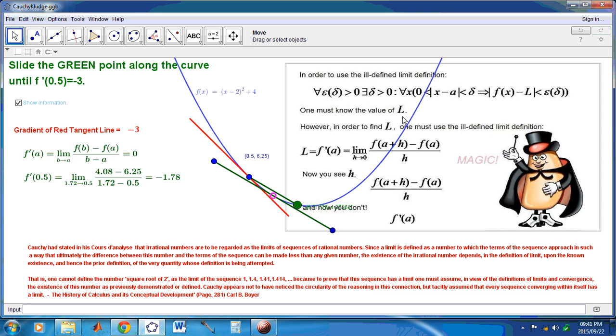So one must know the value of L. However, in order to find L, one must use the ill-defined limit definition, this definition here, which is the same as this one here. Okay, you can easily transform this definition into this definition by a simple substitution. So now you see h over here, and now you don't.